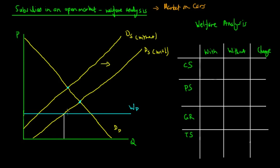With a subsidy, the quantity supplied at the world price — the prevailing market price — is QS1. The domestic demand at this world price is QD. Since quantity demanded is greater than quantity supplied, there is a shortage, and the difference between QS1 and QD represents imports.